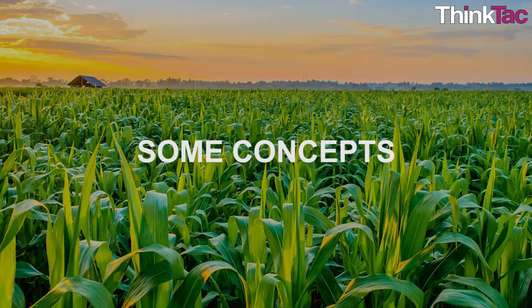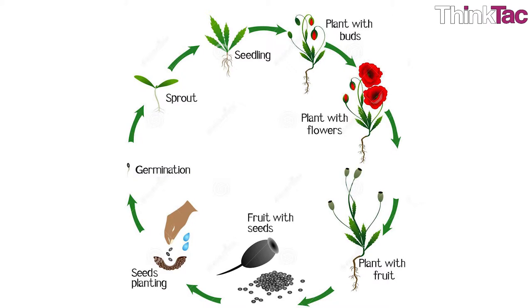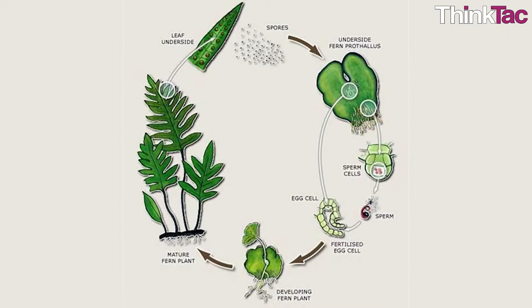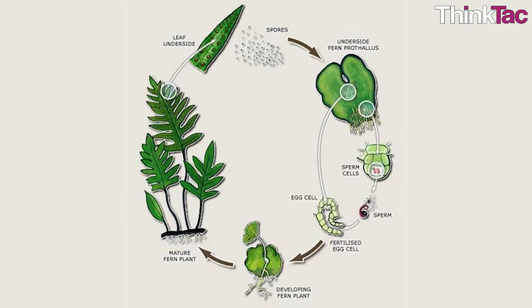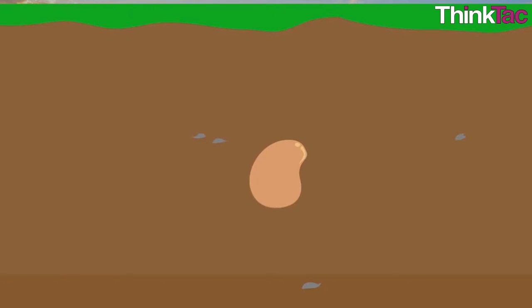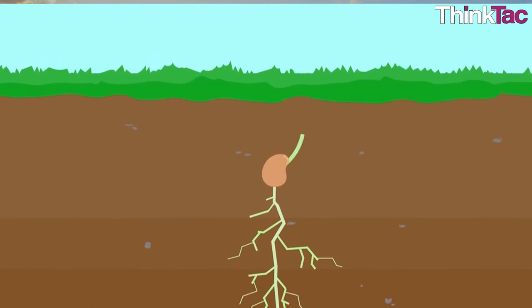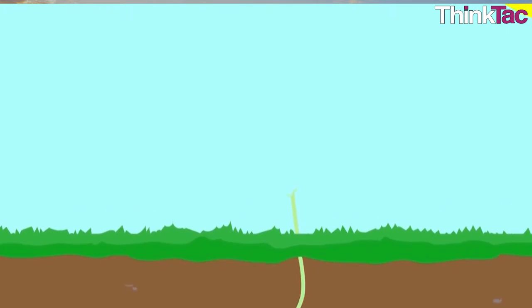Understanding the life cycle of plants: all living organisms undergo a series of developmental changes throughout their life. These changes constitute the life cycle of each organism. There are some kinds of plants that do not produce seeds and have a different process in place of germination. However, for most plants and trees, germination is a part of their life cycle. We will now see the various stages of the life cycle of these plants.